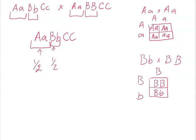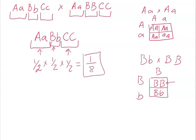The next set of traits, represented by the C genes, follows the same pattern, so we similarly get a probability of one half. Now, we want all three traits together in one genotype — we want the A's AND the B's AND the C's. Since they're all connected by AND, we multiply them all: one half × one half × one half = one out of eight. That is our answer — the probability of getting that particular genotype.